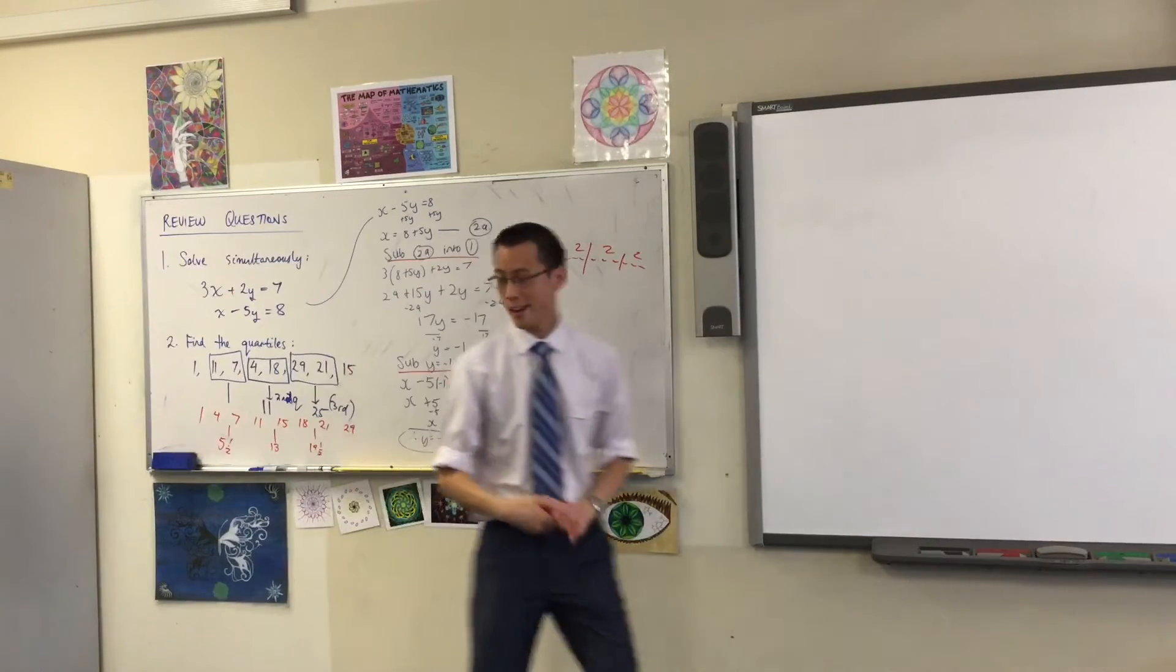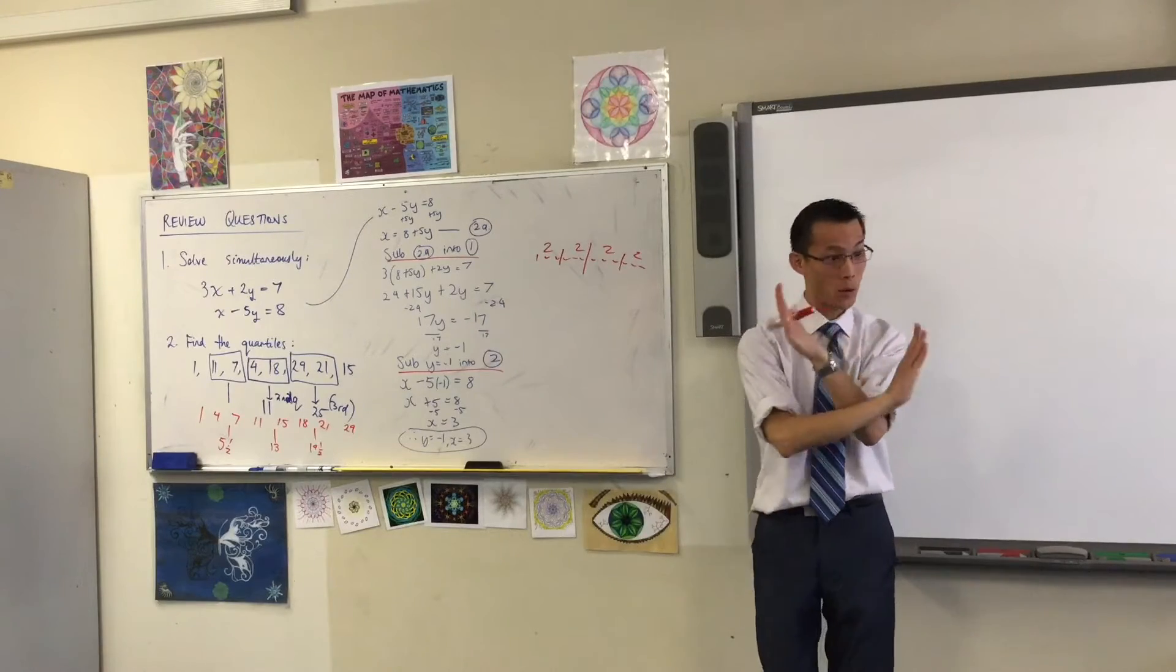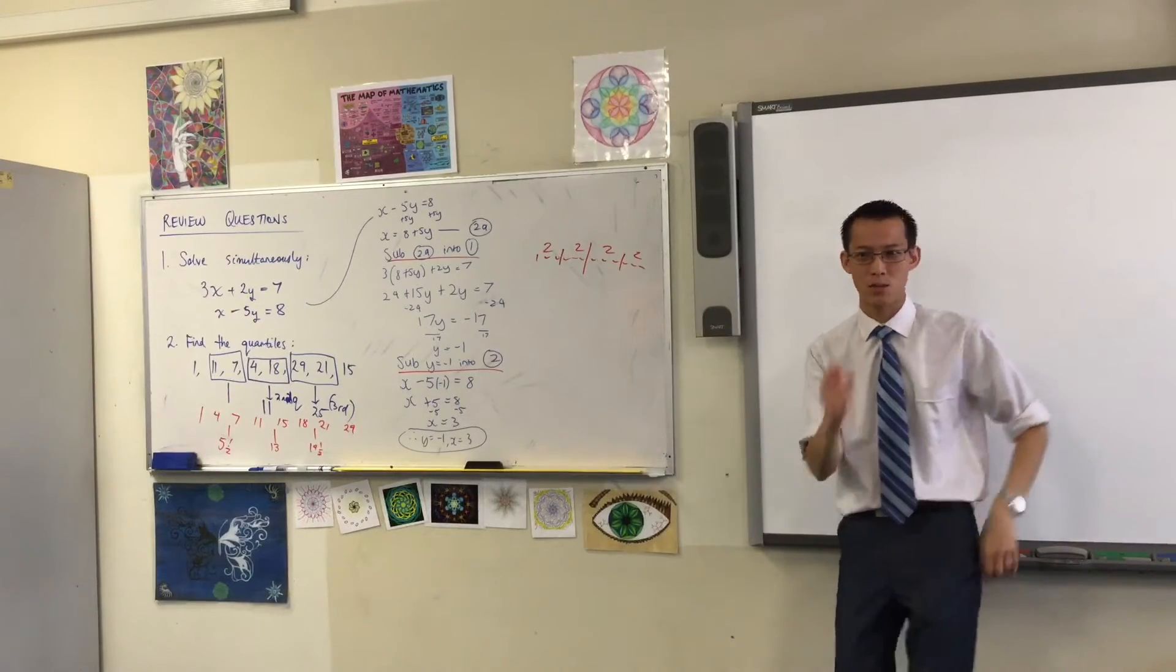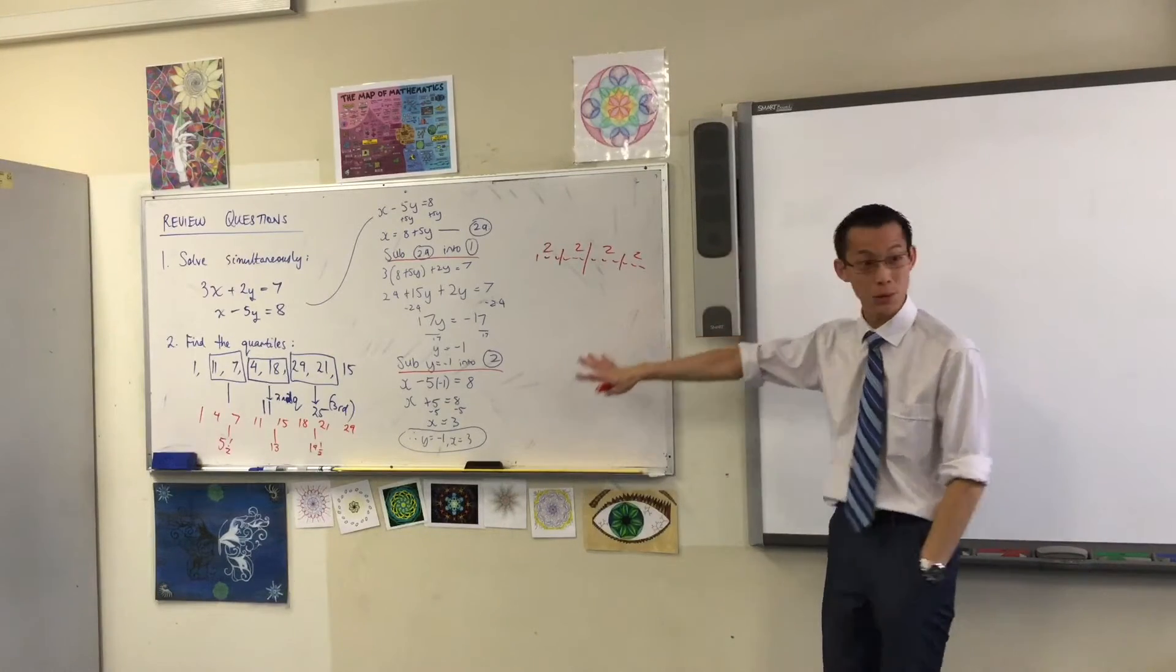And those are the quartiles. Lower quartile, the median, and the upper quartile. So the process was exactly right. There's just one step, and it's a little one. I would argue it's an easy one, that was just missed out. So I'm glad we reviewed that.